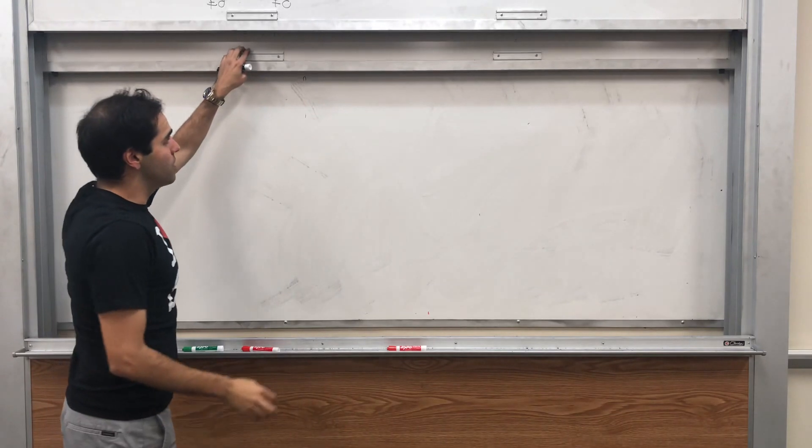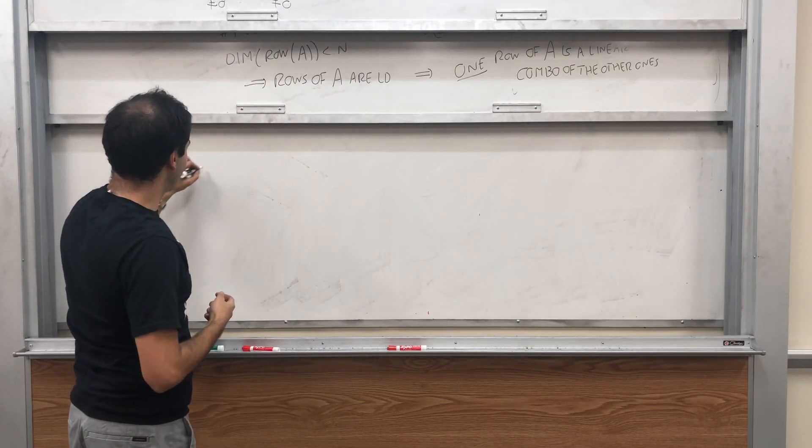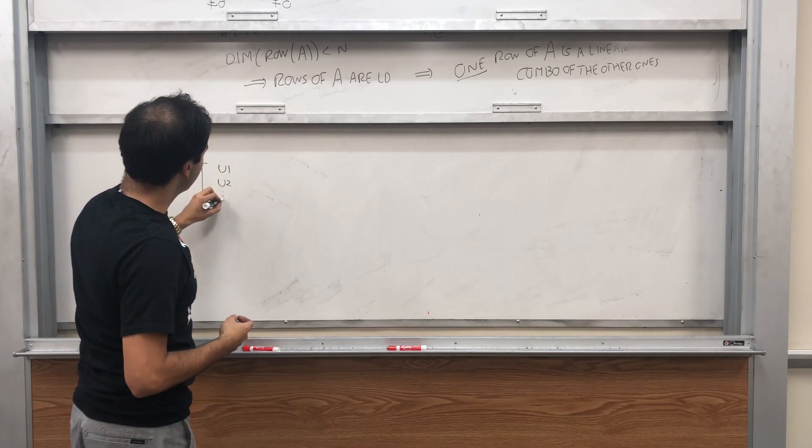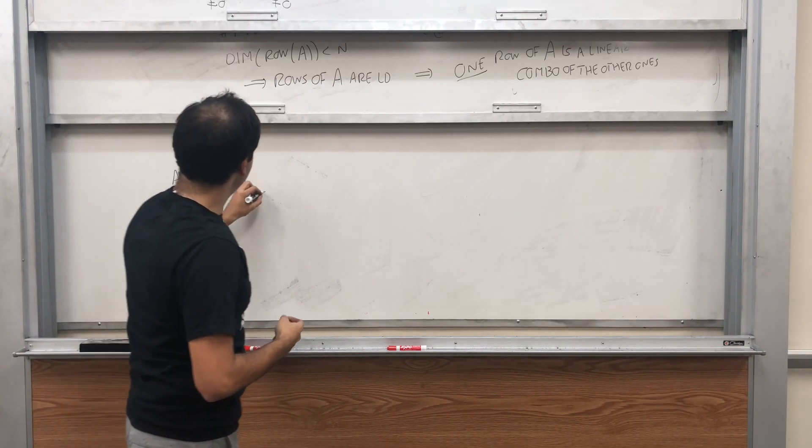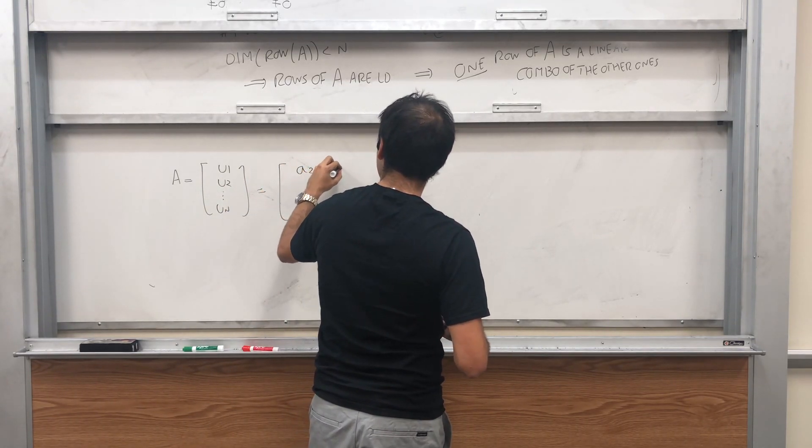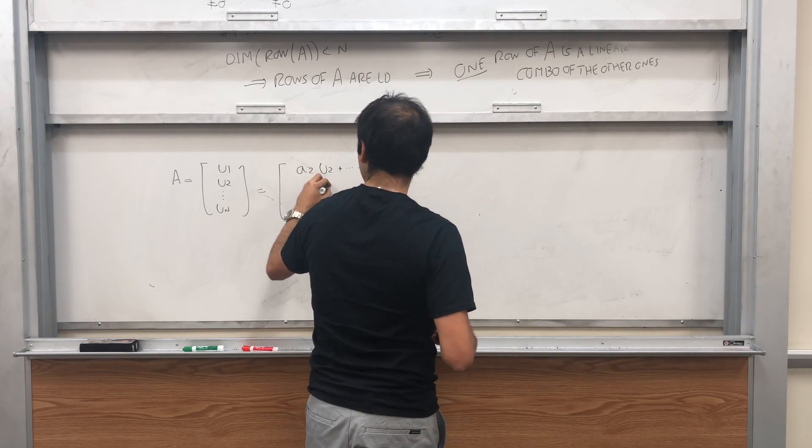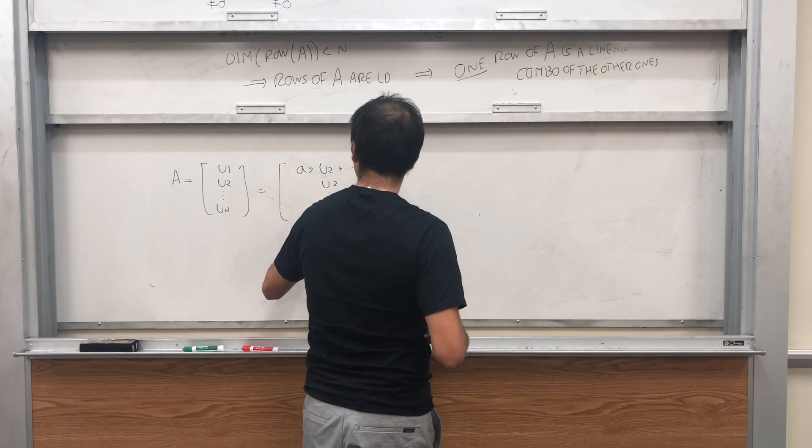Okay, so in particular, what does A look like? A looks as follows. It's of the form U1, U2, dot dot dot, UN. But we know that U1 is A2 U2 plus dot dot dot plus AN UN, and then U2 up to UN.